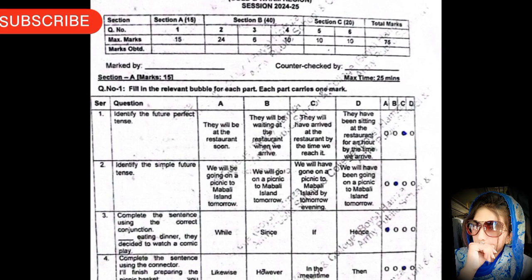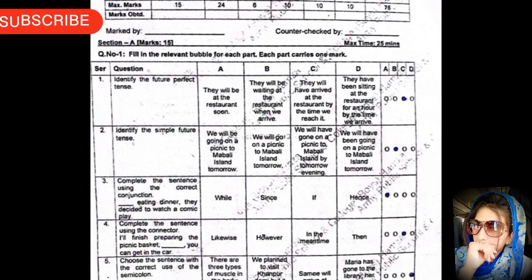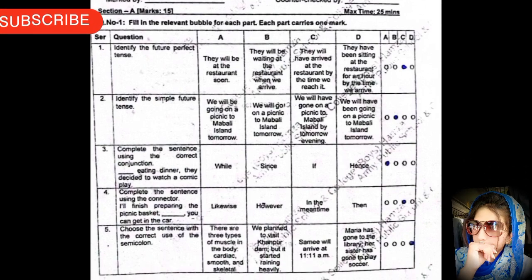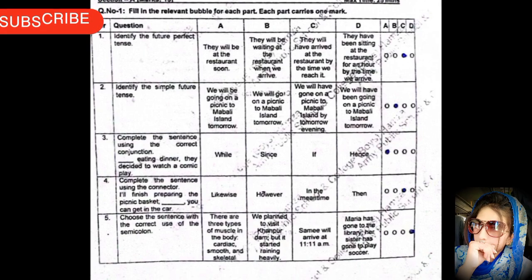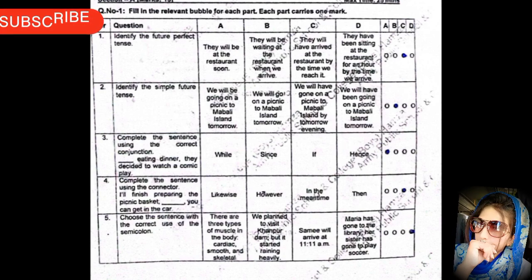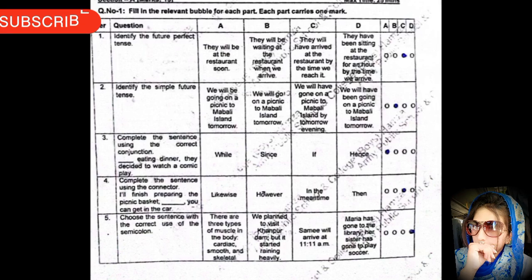Question number one: fill in the relevant bubble for each part; each part carries one mark. MCQ 1: identify the future perfect tense — option C is correct. MCQ 2: identify the simple future tense — option B is correct. MCQ 3: complete the sentence using the correct conjunction — option A is correct. MCQ 4: complete the sentence using a connector — option C is correct. MCQ 5: choose the sentence with the correct use of the semicolon — option D is correct.